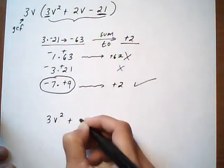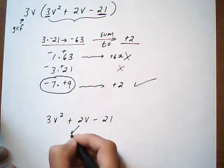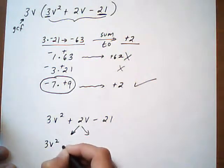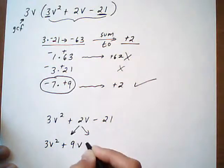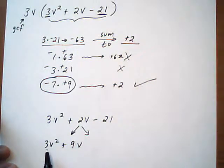So rewrite the trinomial, and split the middle term, so we get 3V squared plus 9V. And I'm doing the 9 first, only because I notice that this has a 3 here. So if I pair the 3 and the 9 together, I'm going to be able to pull out a common factor of 3.